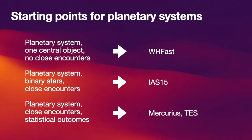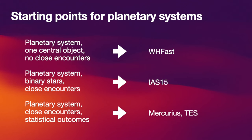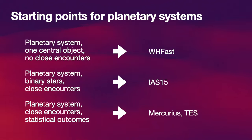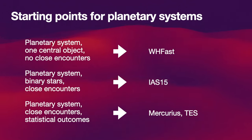If you have a planetary system with one central object and many close encounters and you're interested in the statistical outcome of those close encounters, use Mercurius or alternatively the Terrestrial Exoplanet Simulator TES. In contrast to IAS15, these integrators might be faster, but they may not as accurately resolve individual close encounters. If you want to find out statistically how many asteroids might come within a certain distance of Earth, Mercurius might be the integrator for you.